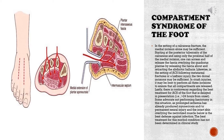Lastly, there is controversy regarding the best treatment for ACS of the foot that is delayed in presentation, i.e., greater than 24 hours from onset. Some advocate not performing fasciotomy in this situation, as prolonged ischemia has already produced myonecrosis and/or permanent neural injury and the intact skin overlying the necrotized muscle below is the best defense against infection. The best treatment for this morbid condition has not been determined in clinical study.